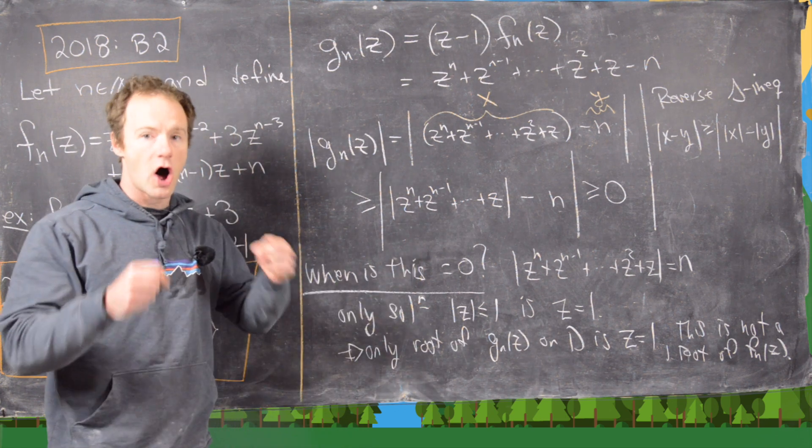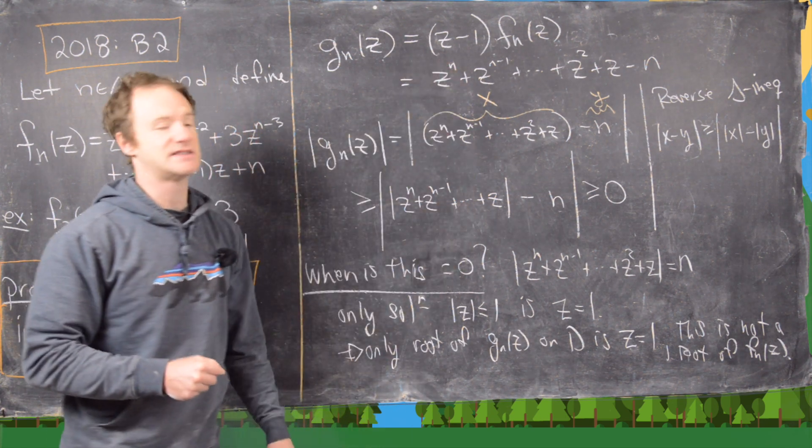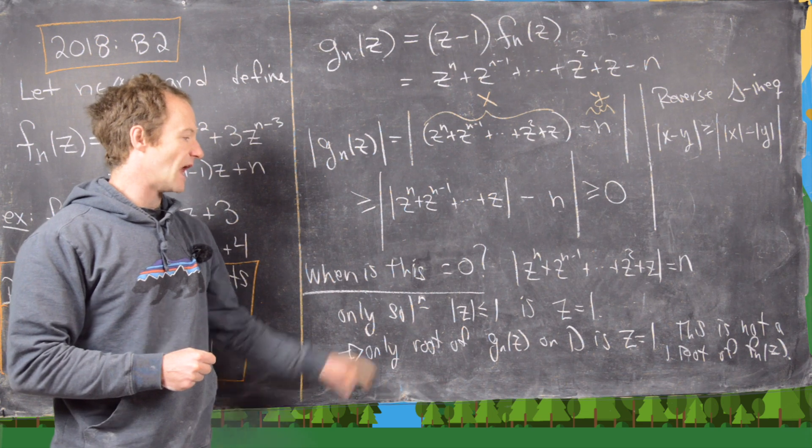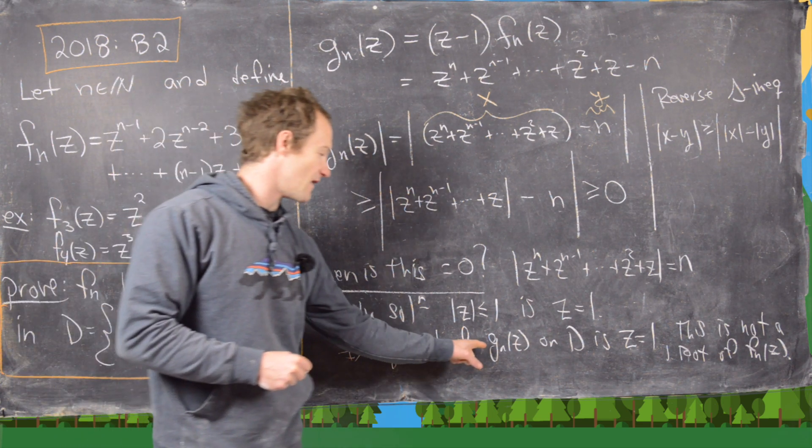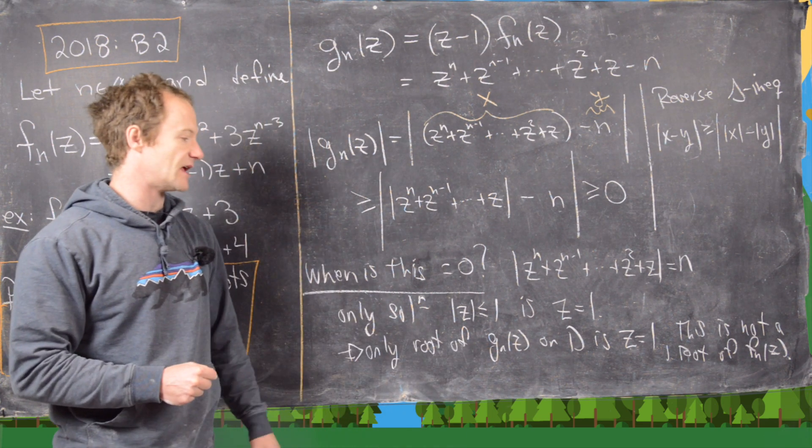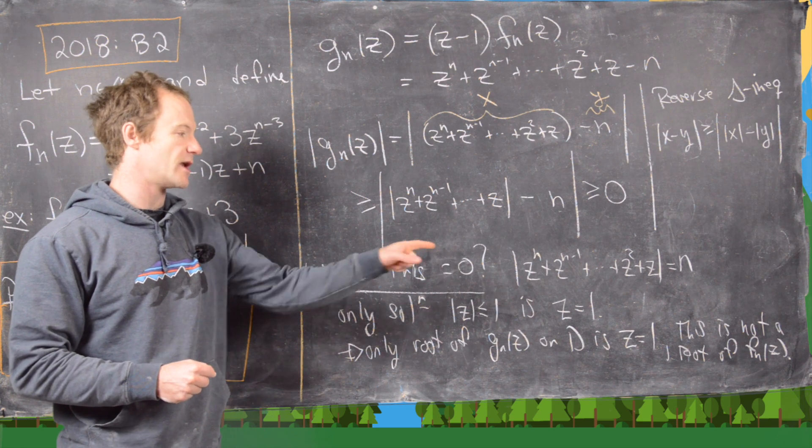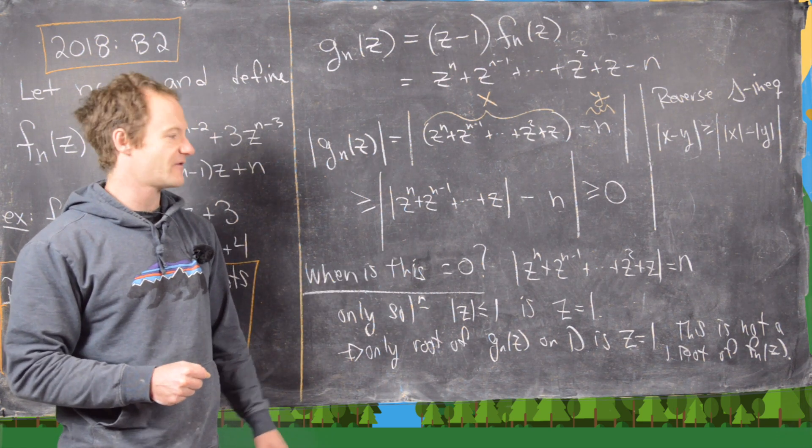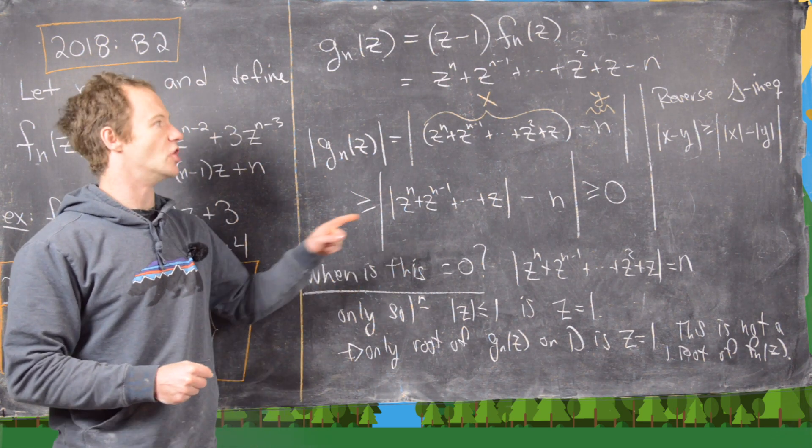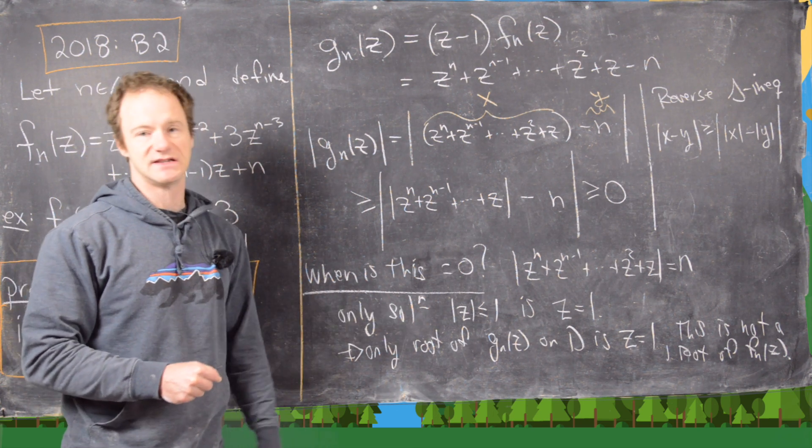So let's reiterate what we have here. This polynomial gn and fn share all of the same roots except z equals 1, and what we've shown is that the only root of gn on D is z equals 1. But that can't be a root of fn, which means fn has no roots on this disk D.